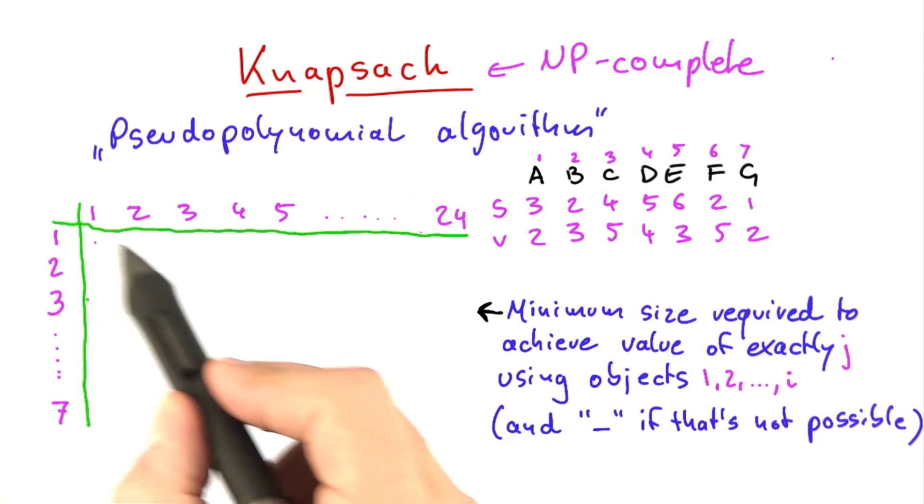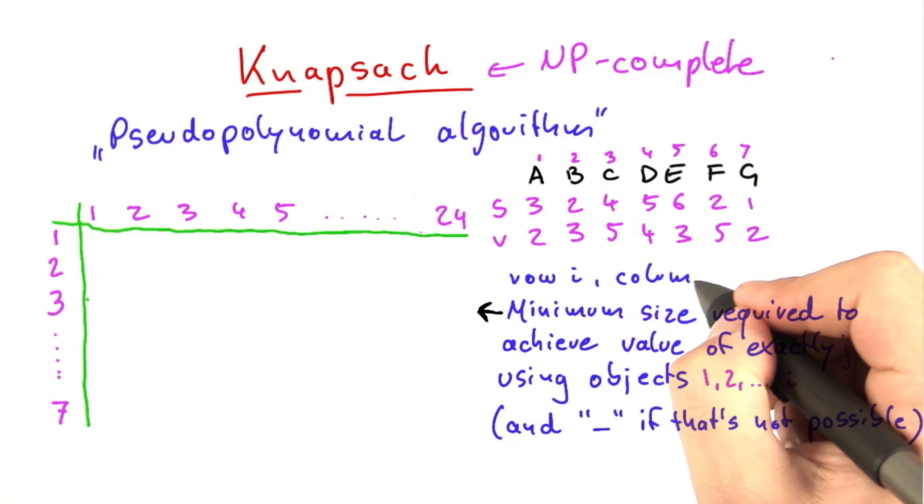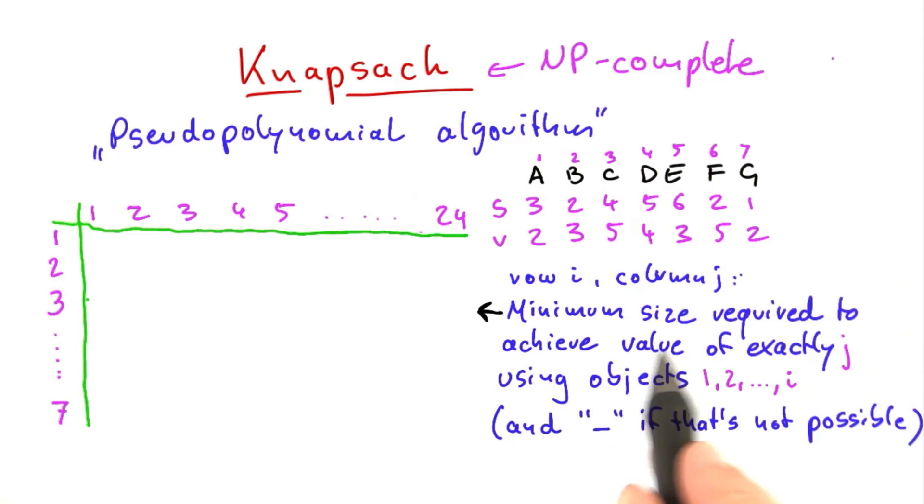So we have 7 rows and 24 columns in this table. We're going to fill this out row by row. So we start out in row 1, then row 2, and so on. So for row i and column j, what we want in this table is the minimum size required to achieve a value of exactly j using the objects 1 to i.